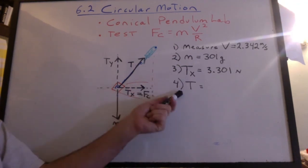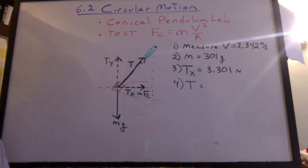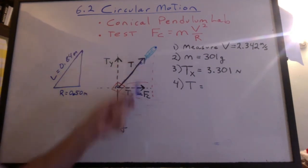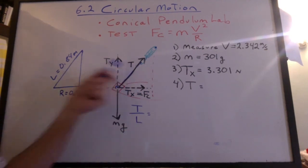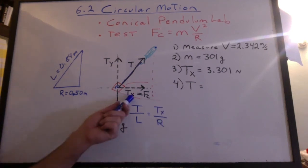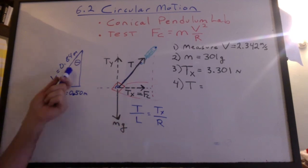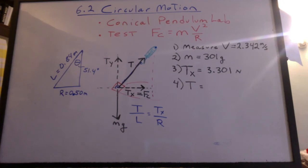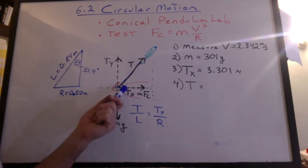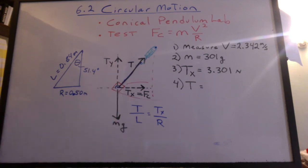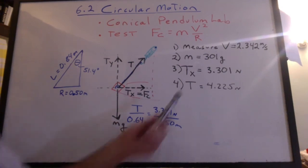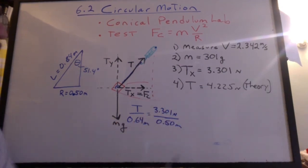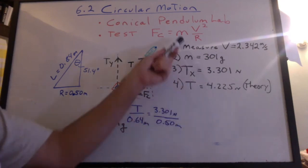How can we take this x component and get the tension? Looking at the diagram, we have similar triangles here with the distances. We can say that the tension is to l as Tx is to r. Now if you don't want to do similar triangles, you can use trigonometry and get that angle. You'll get 51.4 degrees. Do the same trigonometry with this diagram and you'll get tension. Throw in all the numbers. And we get 4.225 newtons for the tension. And that's theoretical because we use the formula we're trying to test.